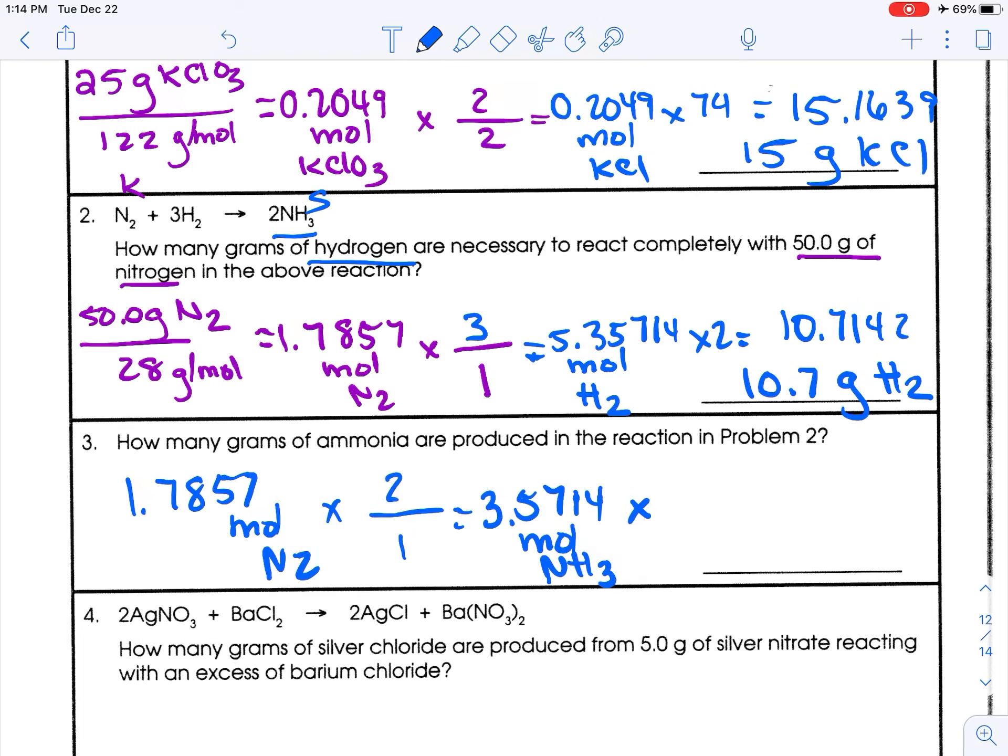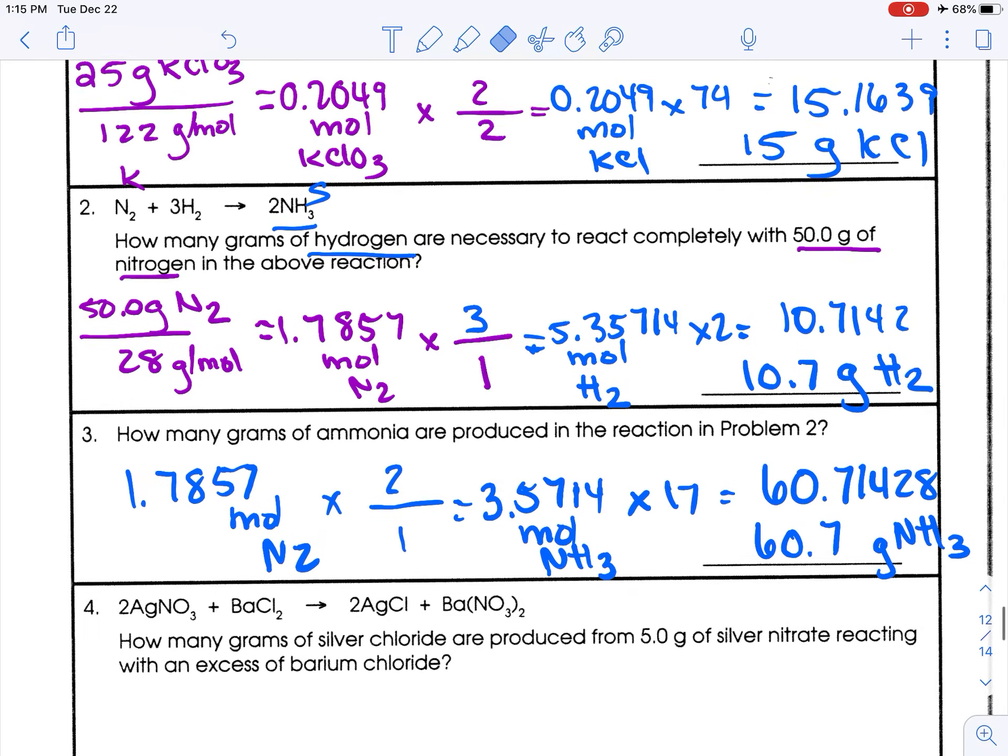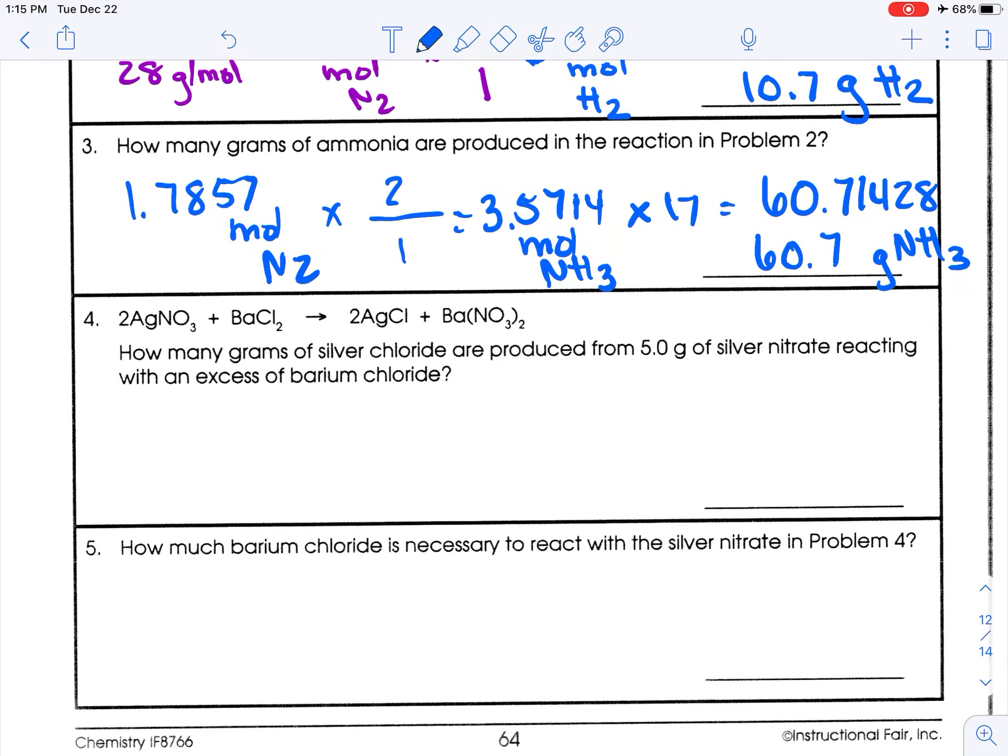So then we're going to multiply by the new GFM. Ammonia is 14 for nitrogen and this is 3 times 1. So that's 3. Add it up to 17. And so you're going to get 60.71428 whatever. So let's do 60.7. Grams of ammonia.